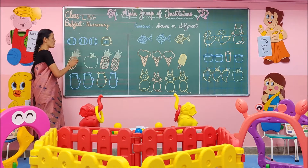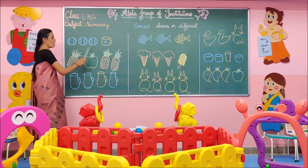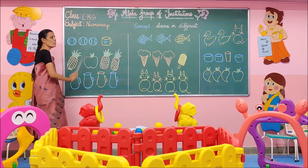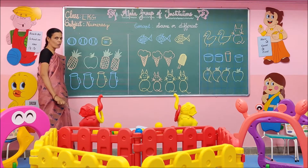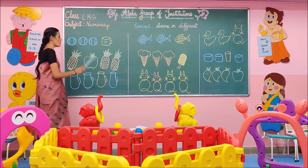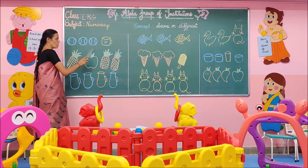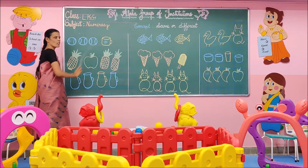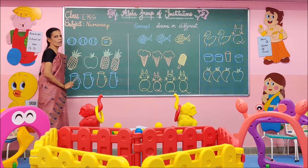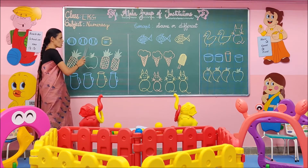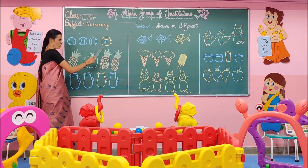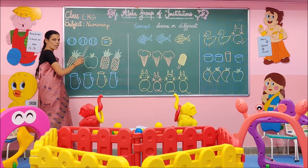Here we have a group of balls. This is a ball. This is a ball. This is a ball. This one is a cup. It does not belong to this group. This is different. Cup is different in this group.